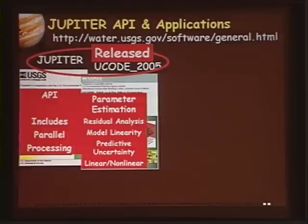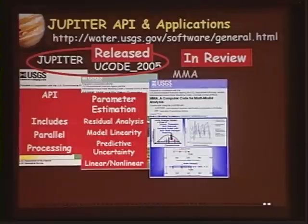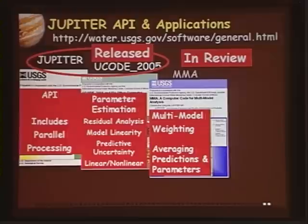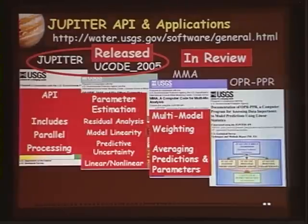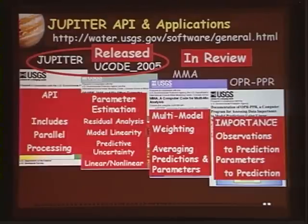UCODE is a parameter estimator and has a number of associated codes for evaluating your model. Two that are in review at the USGS include MMA — Multi-Model Analysis — that does multi-model weighting and averaging of the predictions and parameters. It is written in a very general way so you can use any of the common criteria or create your own criterion.